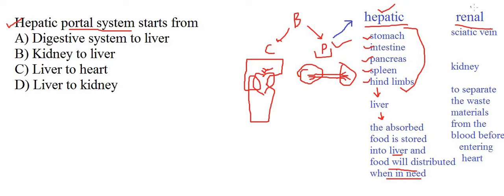Now, what is the Renal Portal System? The Renal Portal System involves two veins. One is the sciatic vein, which is in the hip area, and the other is the femoral vein, which extends up to the thigh bone. These veins are connected and lead to the kidneys.